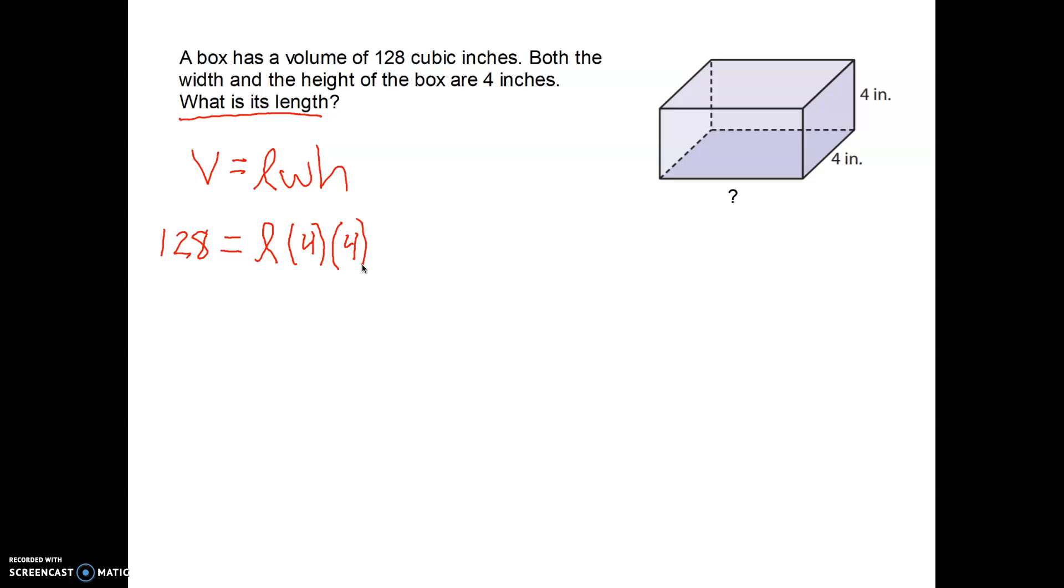The next thing I'm going to do is try to simplify this equation a little bit. I can multiply these two 4s together to get 16. And then I can bring down my variable and my equal sign and my 128. So now we've got 128 equals the length times 16. Remember the whole purpose of this equation right now is to find the length. We want to know what the L equals. Let's think back to how we solve equations.